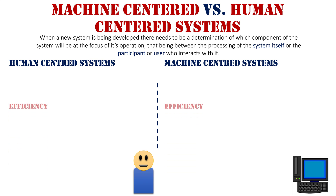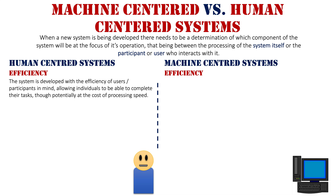Firstly, we look at efficiency. With a human-centered system, it's developed around the efficiency of the user or participant in mind, allowing individuals to be able to complete their tasks, though potentially at the cost of processing speed. It's about the human being able to do their tasks comfortably and understand what's going on, with things available to allow them to do their work more effectively, so that they are at the center of the design of the new system.